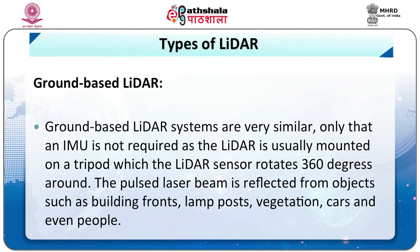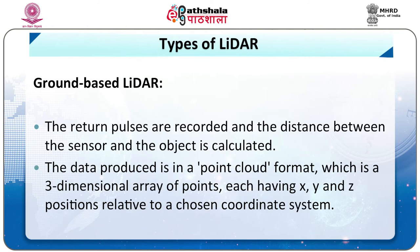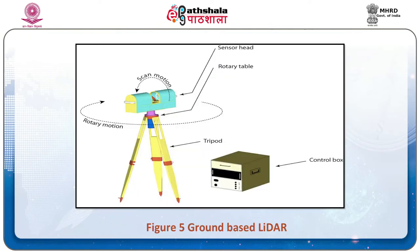Now we will discuss ground-based LIDAR. Ground-based LIDAR systems are very similar, except that an IMU is not required. The LIDAR is usually mounted on a tripod and the sensor rotates 360 degrees. The pulsed laser beam is reflected from objects such as building fronts, lamp posts, vegetation, cars and even people. The return pulses are recorded and the distance between the sensor and the object is calculated. The data produced is in a point cloud format — a three-dimensional array of points each having X, Y and Z positions relative to a chosen coordinate system. The structure of ground-based LIDAR is shown in figure 5.